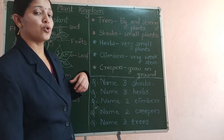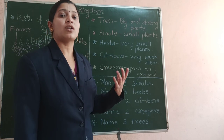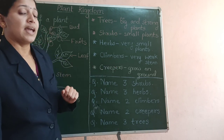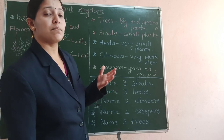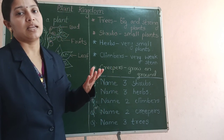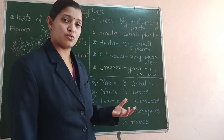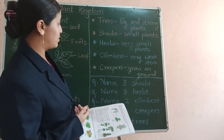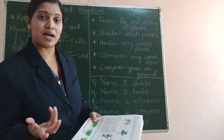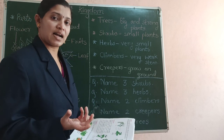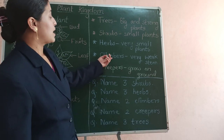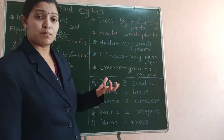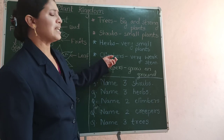So these climbers grow on other things or other plants and so they are called climbers. Examples for climbers: the best example is money plant, seen in everybody's house. Also we have grapevine. Then we have cucumber plant. Also plants that give us beans and pods are climbers.